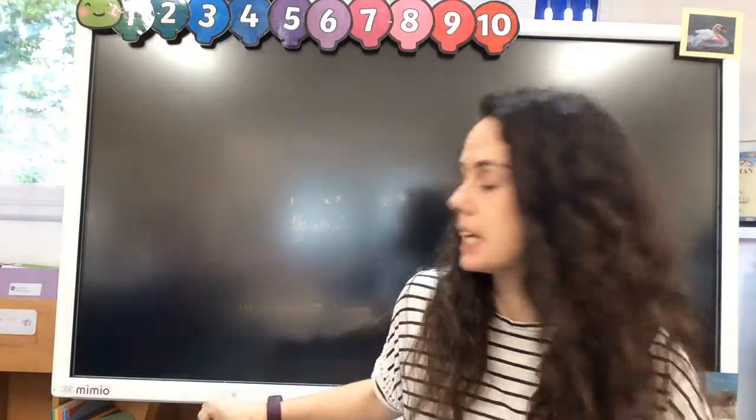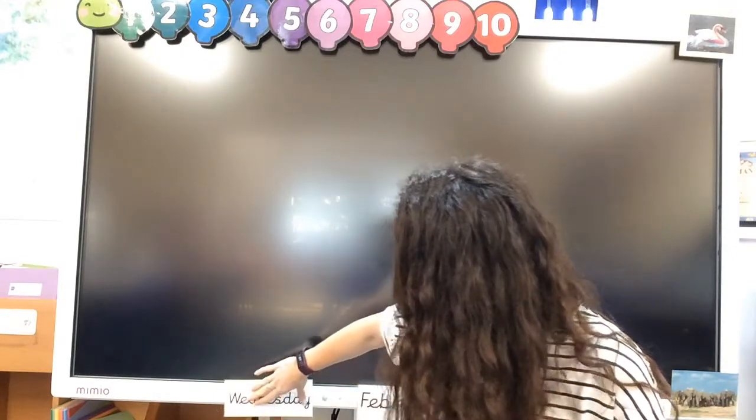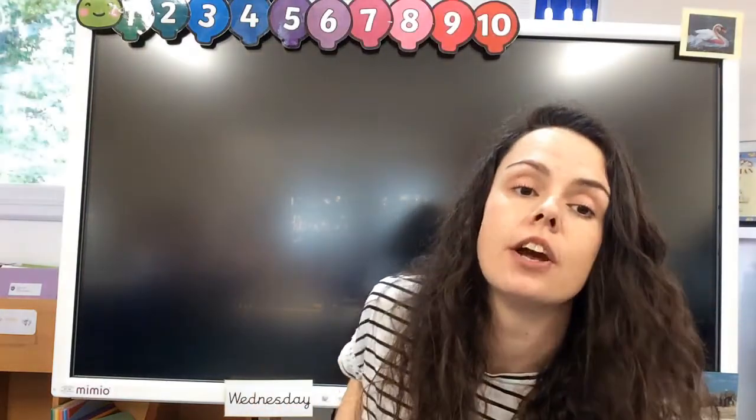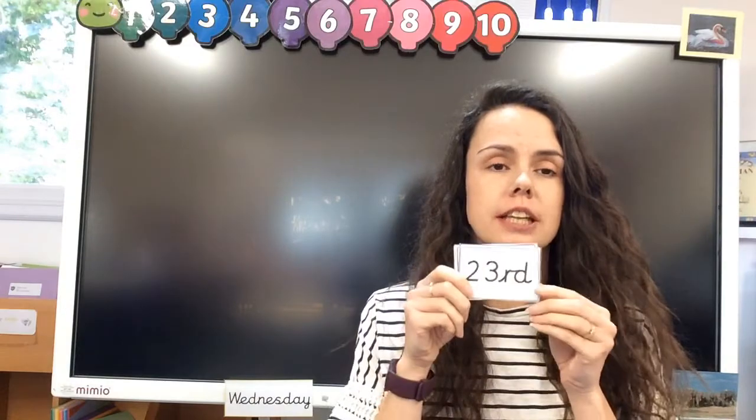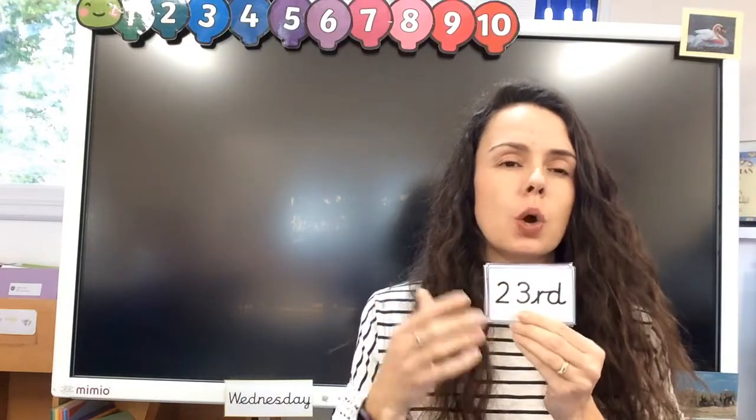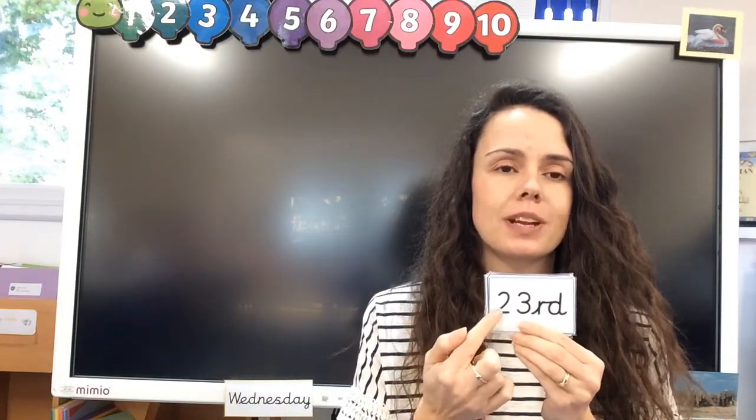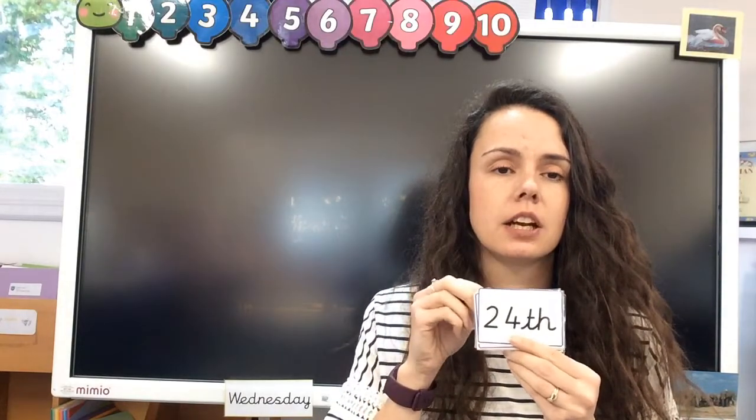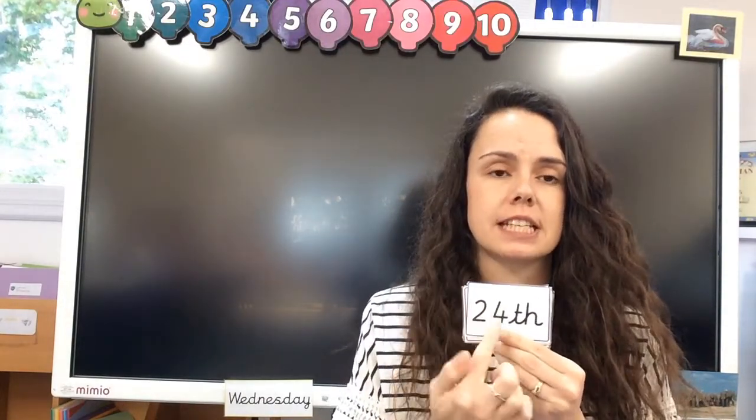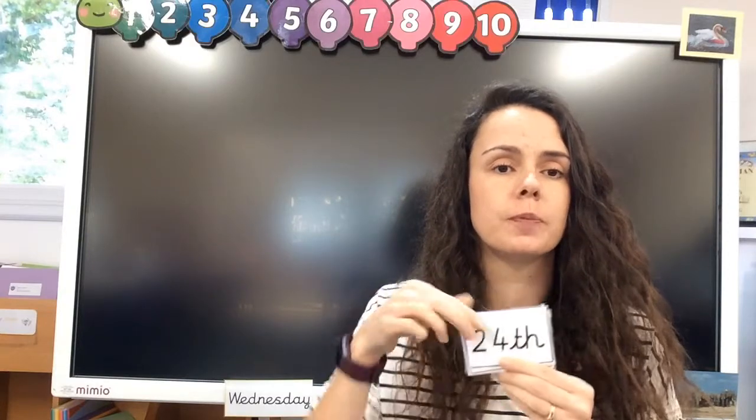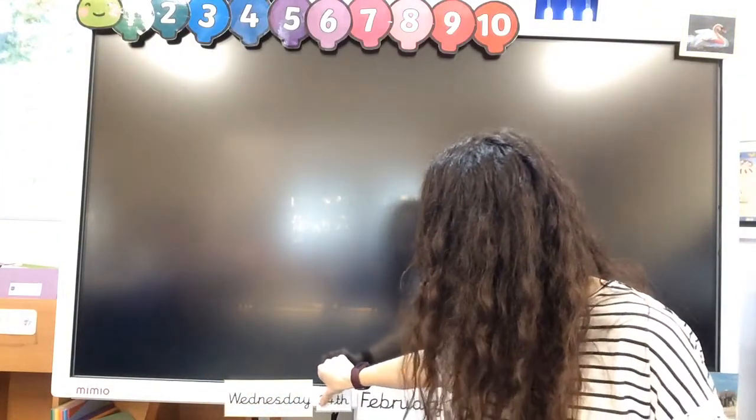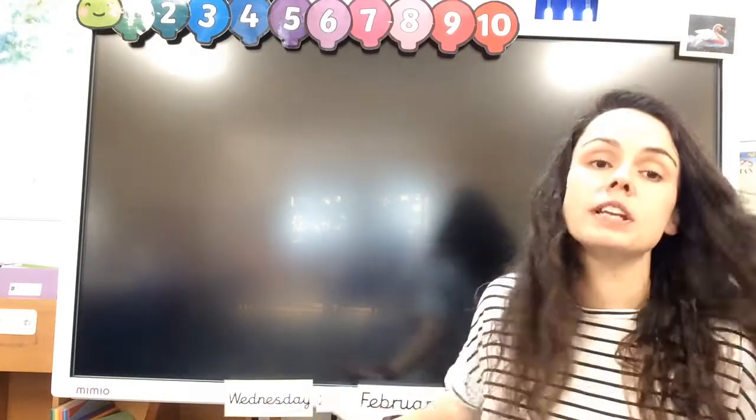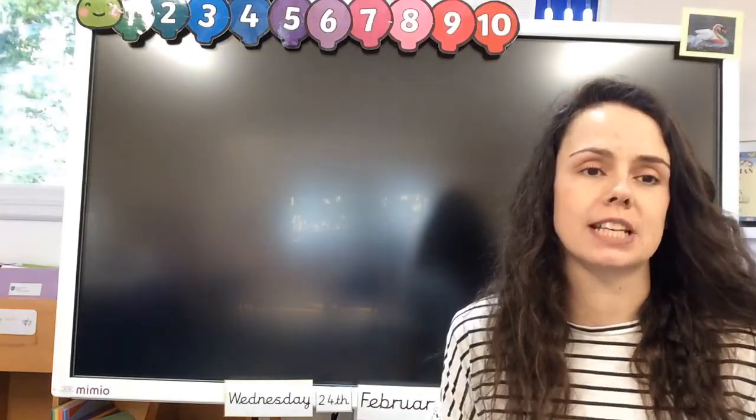Fantastic. There you are, Wednesday. Let's pop Wednesday up. Now if yesterday was the 23rd, looks like this, 23rd, what's today? What comes after 23? 23, 24. Fantastic. Today is the 24th. So if we look at today's date, today is Wednesday the 24th of February. Fantastic.